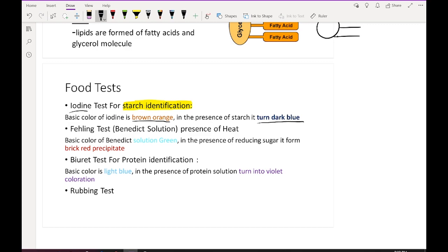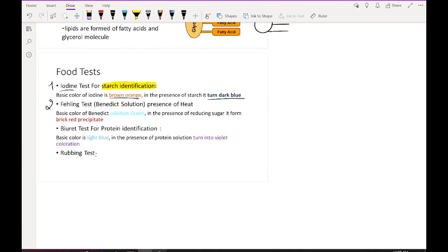Fehling test or Benedict solution - they have the same aim. We use them to see if a type of food contains reducing sugar or not. What is reducing sugar? Just a revision: reducing sugars are monosaccharides and disaccharides except sucrose.